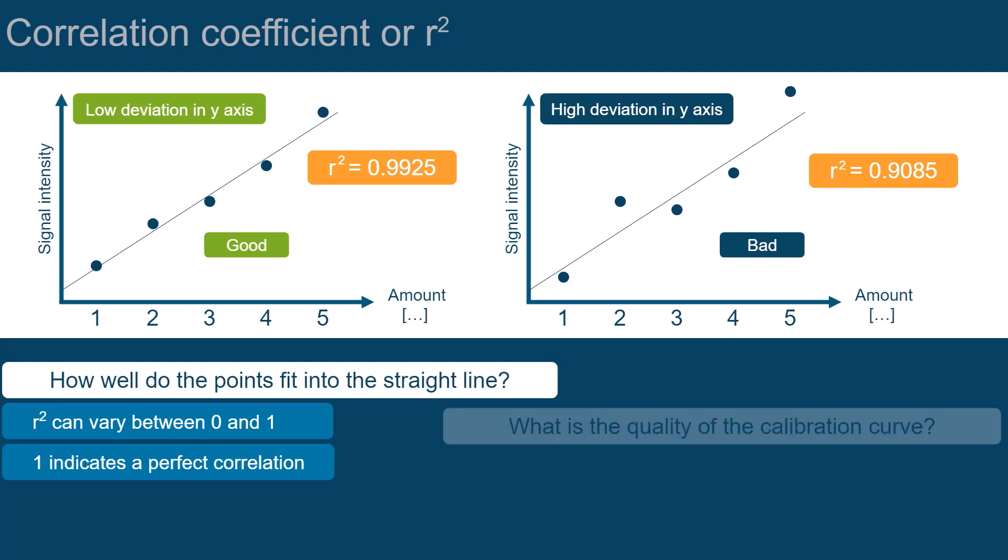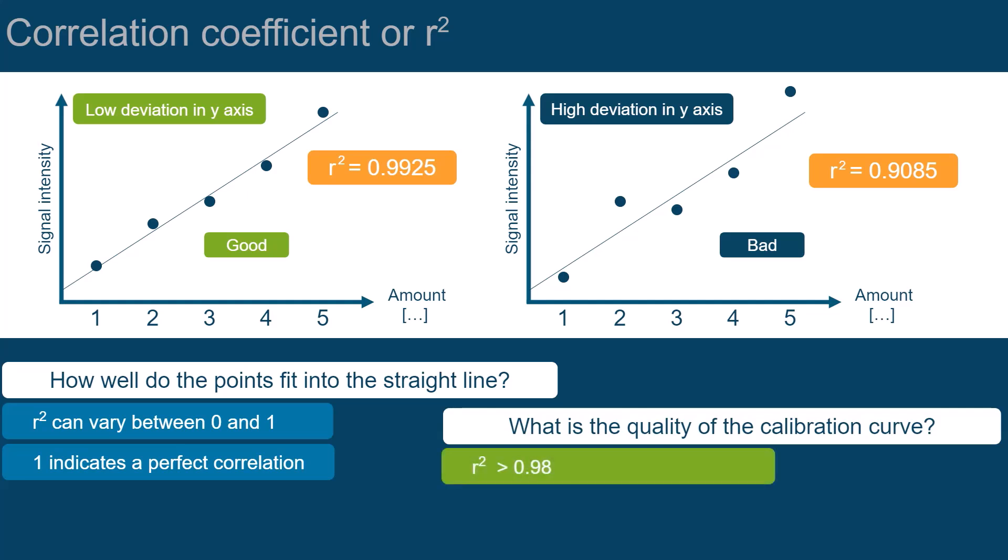It is used to describe the quality of your calibration curve, and values need to be at least above 0.98. It is good practice to report at least three decimals of R-squared.